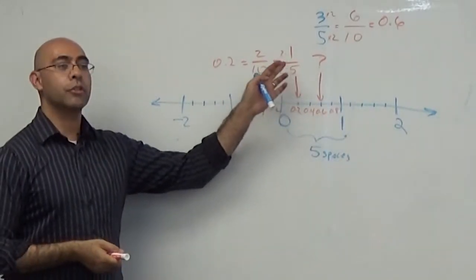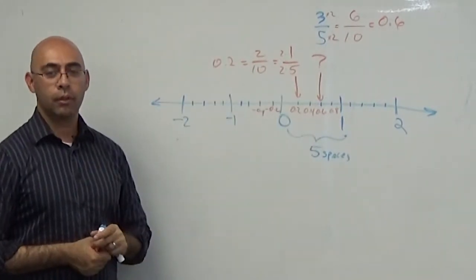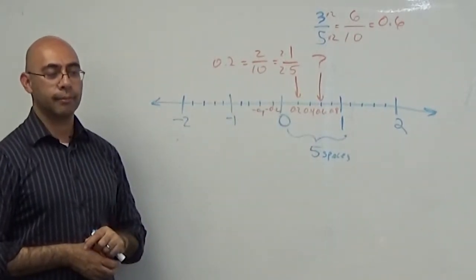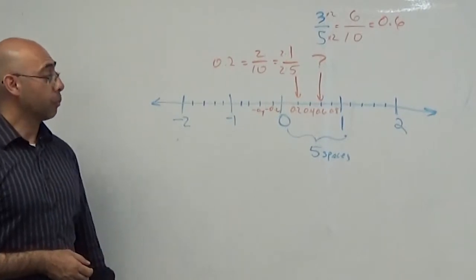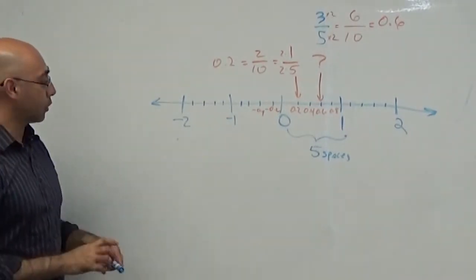So turn it into the fraction, then turn the fraction into a decimal if they don't give you the numbers. Got it? All right, so basically you're going to be identifying, so I'm going to ask you what is this point right here?